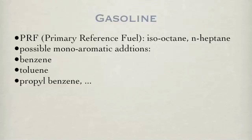The classic surrogate fuel for gasoline, which is also used in the definition of motor and research octane numbers (MON and RON respectively), is the primary reference fuel, which is a mixture of iso-octane and n-heptane. Recently, some aromatics have been added, such as benzene, toluene, and propylbenzene.